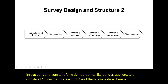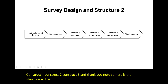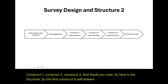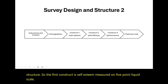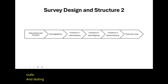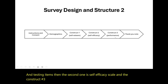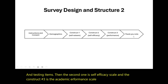The first construct is self-esteem, measured on a five-point Likert scale and has 10 items. The second one is the self-efficacy scale, and construct number three is the academic performance scale. Finally, we have a thank-you note.